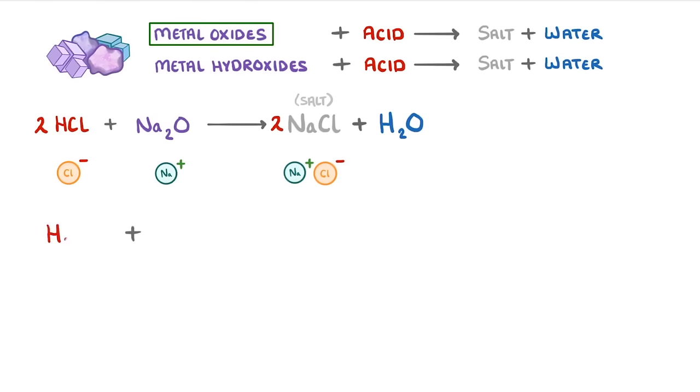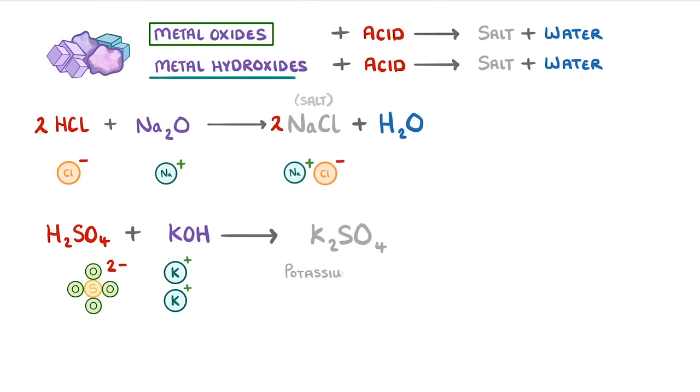Or if we added sulfuric acid to a metal hydroxide, like potassium hydroxide, each of the negative sulfate ions, which are 2-, would combine with two of the potassium 1+ ions to form our salt, K2SO4, which is potassium sulfate. And just like before, we'd also get water and then have to balance it.